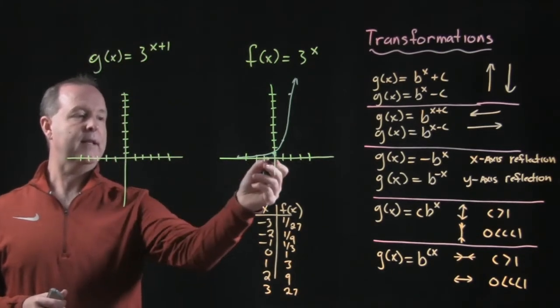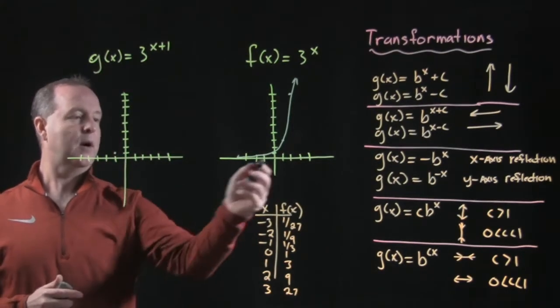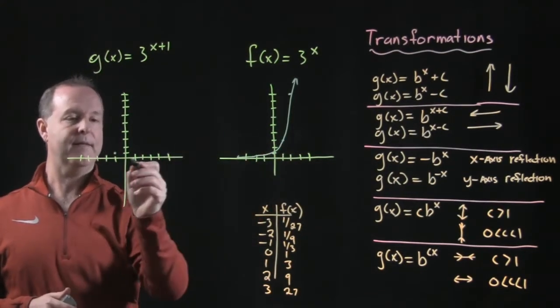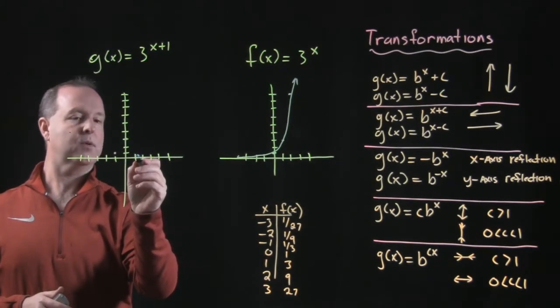So rather than... Let's look at this point. Rather than 0, 1, I have the point negative 1 and 1. Rather than the point 1 and 3, I have the point 0 and 3. This point becomes 1 and 9.